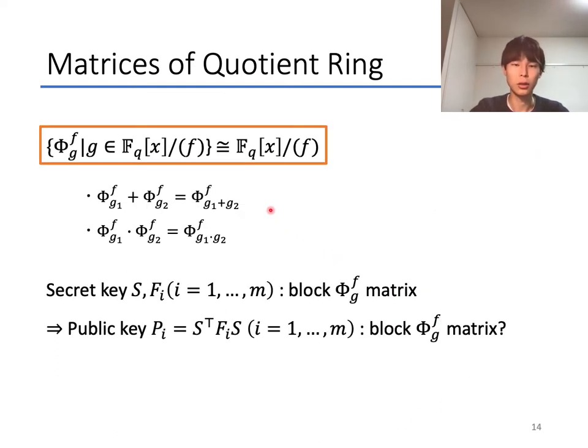From the definition of polynomial matrices, the map from g to Φ_g^f is an injective ring homomorphism like this. So, if we assume that the secret keys of UOV are set as block Φ_g^f matrices, which are block matrices whose every component corresponds to Φ_g^f, we then wonder if the public key of UOV is also block Φ_g^f matrices or not.